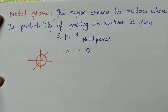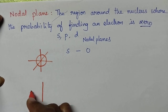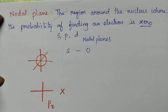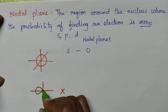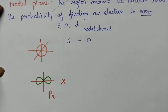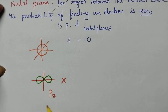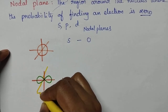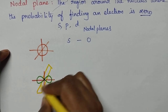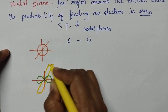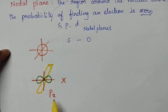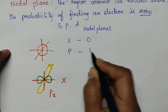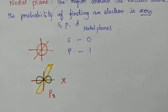Coming to the p-orbital, let us consider the Px orbital. The probability of finding an electron is maximum along the Px orbital direction, which means there is a plane where the probability is 0 — this is called the nodal plane. So in the case of p-orbital, the number of nodal planes is equal to 1.